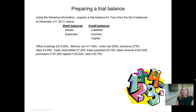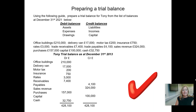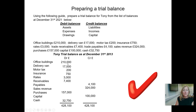Hopefully you've had a go at the trial balance and managed to get it to agree. I've prepared one here, and if you've done it correctly, you should find that the debits and the credits both equal £428,100. If they didn't, it's possibly because you've missed something out, or put something on the wrong side. Just to recap: office buildings are an asset, and so is the delivery van — that's why they're on the debit side.